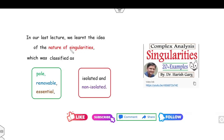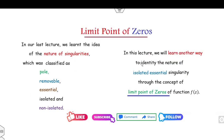What we have discussed so far: we have classified the different kinds of singularities in our previous lectures — named as pole, removable, essential, isolated, non-isolated, and many more. In this lecture I will tell you another way how you can classify the isolated essential singularity through the very beautiful concept known as limit points of zeros.